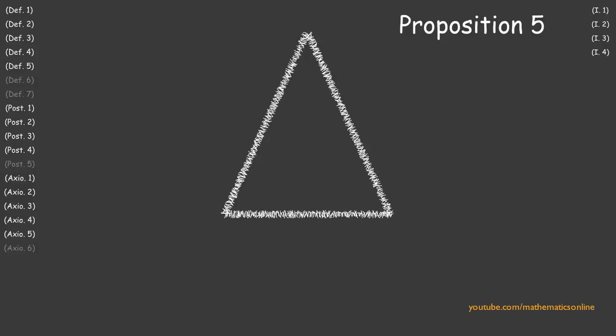In Proposition 5, we prove that with any isosceles triangle, the base angles are always congruent.